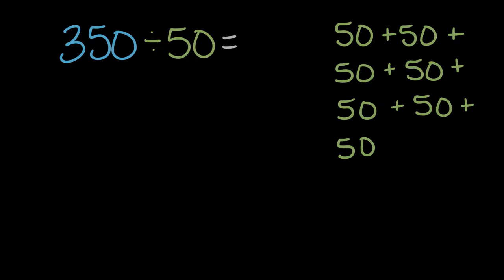So 350 divided into groups of 50 is seven. Now let's look at that quotient, that solution of seven, and let's notice something. If we had simply divided 35 by five, we would have also gotten seven. 35 divided into groups of five is also equal to seven.